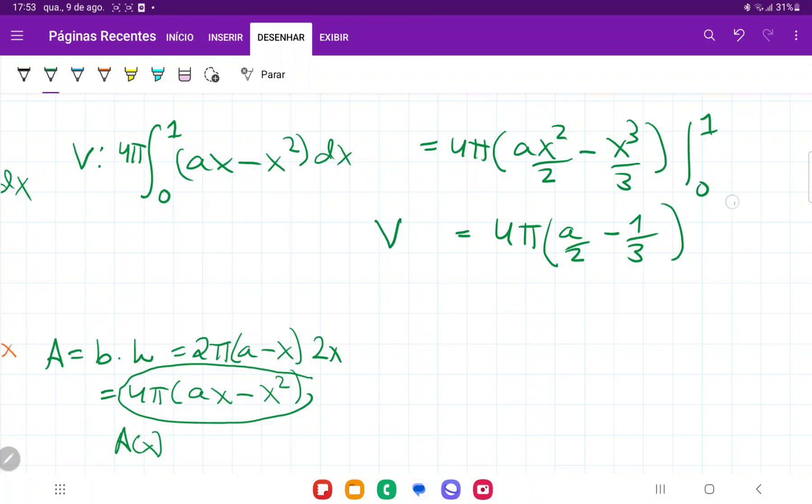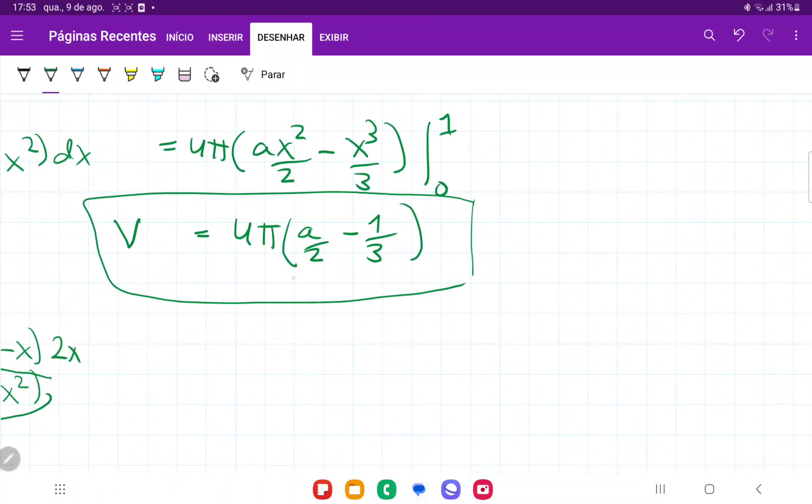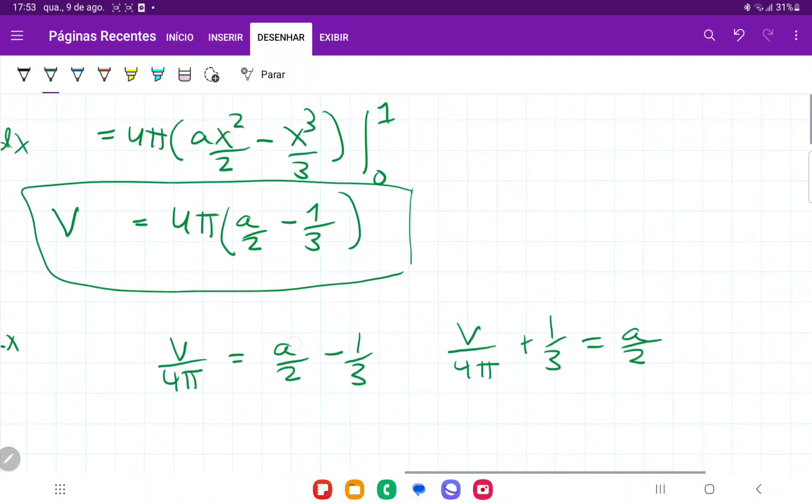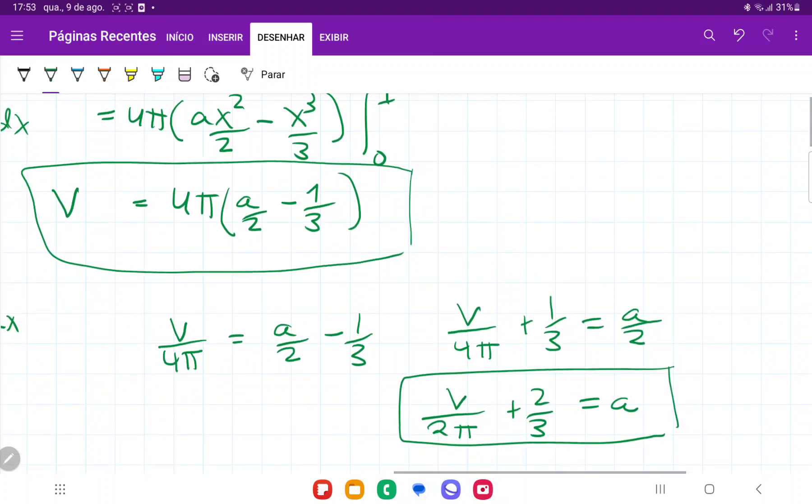But actually, they don't want the volume. They want us to express a in terms of V. So we're actually going to have to isolate a. So we're going to take this and we're going to first divide everything by 4π. So we have V/(4π) equals a/2 minus 1/3. Then I'm going to add 1/3 to both sides. So I have V/(4π) plus 1/3 equals a/2. And then I'm going to multiply everything by 2. So this would be V/(2π) plus 2/3 equals a. And that is my a in terms of V.